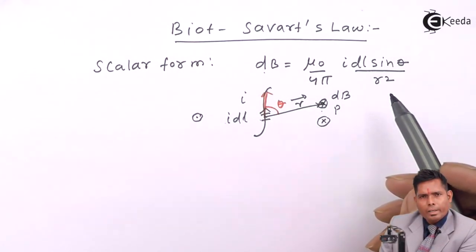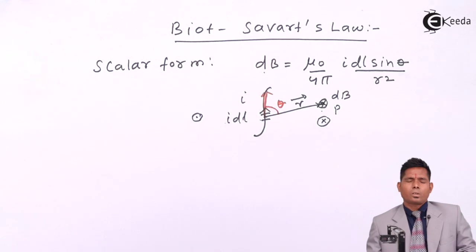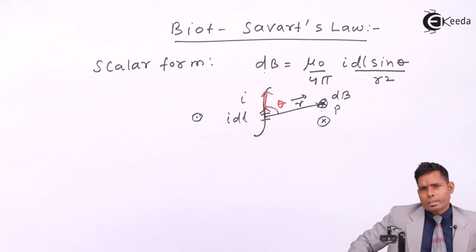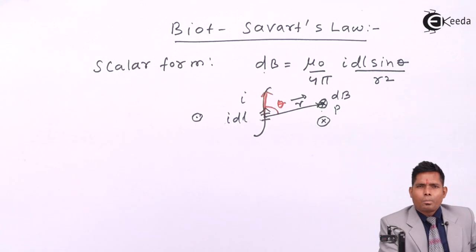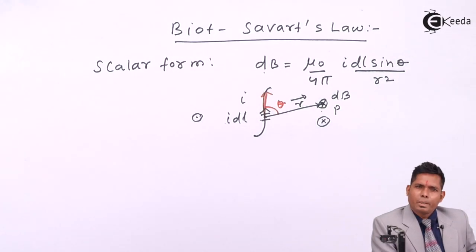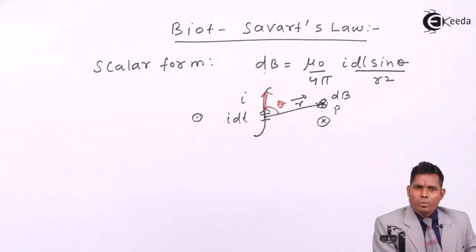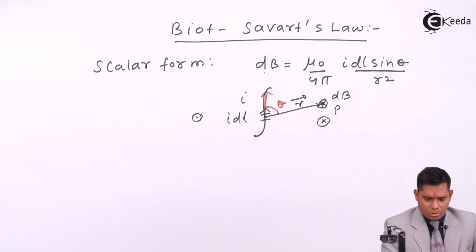Now if we consider the vector product of two vectors — suppose p and q are two vectors — then the cross product is given by p q sin theta and a unit vector. That unit vector must be perpendicular to the plane containing p and q, and its direction is given by the right-hand rule, as we have already discussed in cross product.